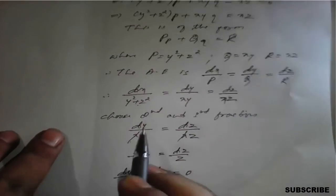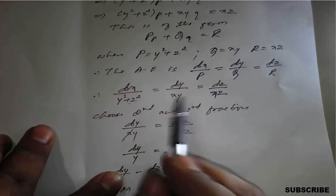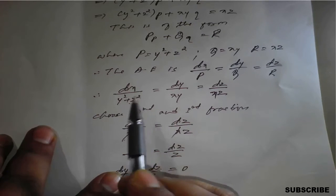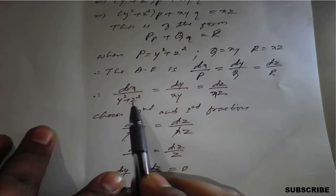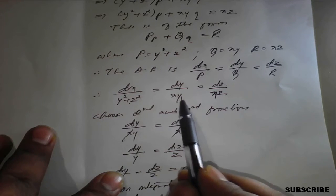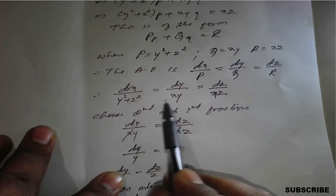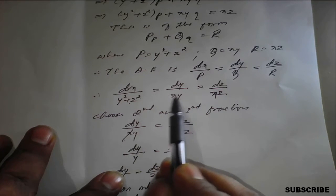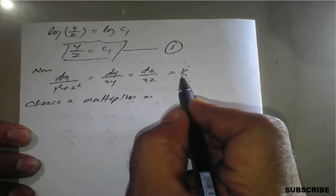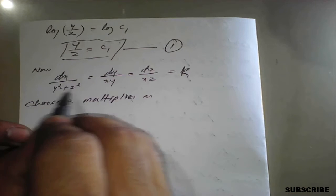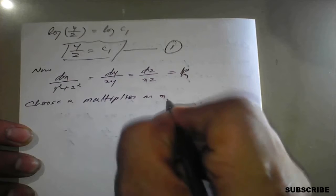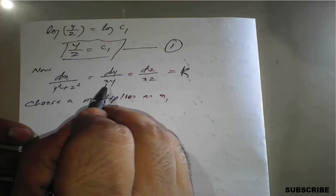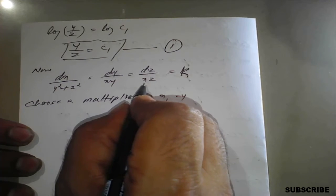Since no other direct pair is possible, we need to choose a multiplier. We choose multipliers X, -Y, and -Z for the denominators (Y² + Z²), XY, and XZ respectively, such that when combined the right-hand side becomes zero. We write X·dx - Y·dy - Z·dz = K times [X(Y² + Z²) - Y(XY) - Z(XZ)].